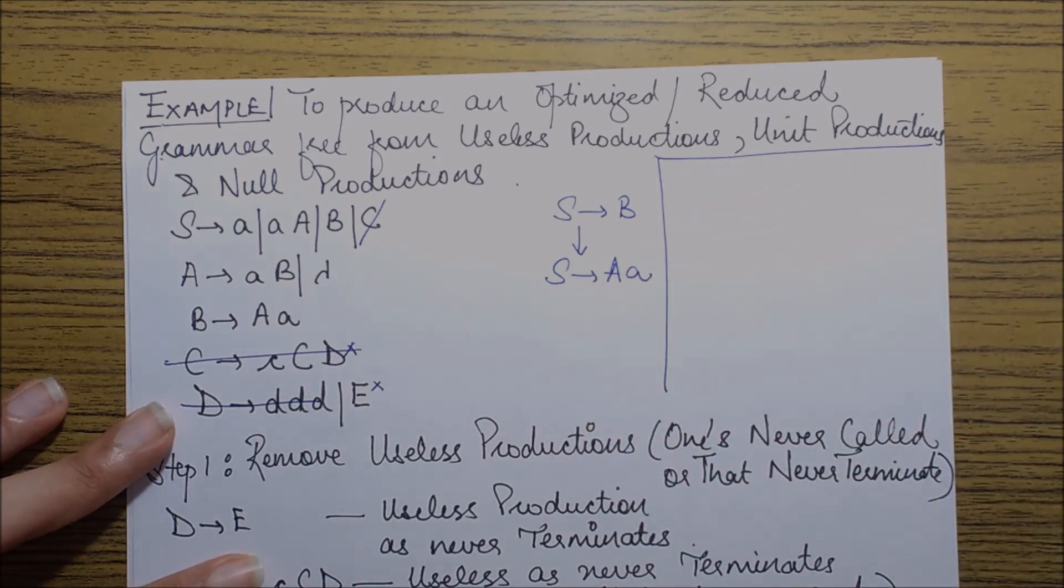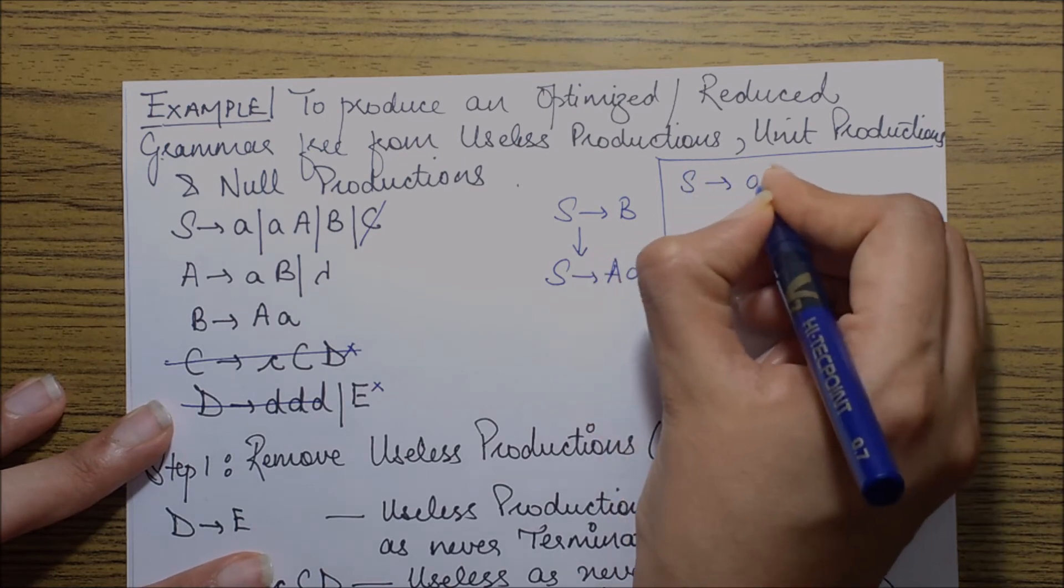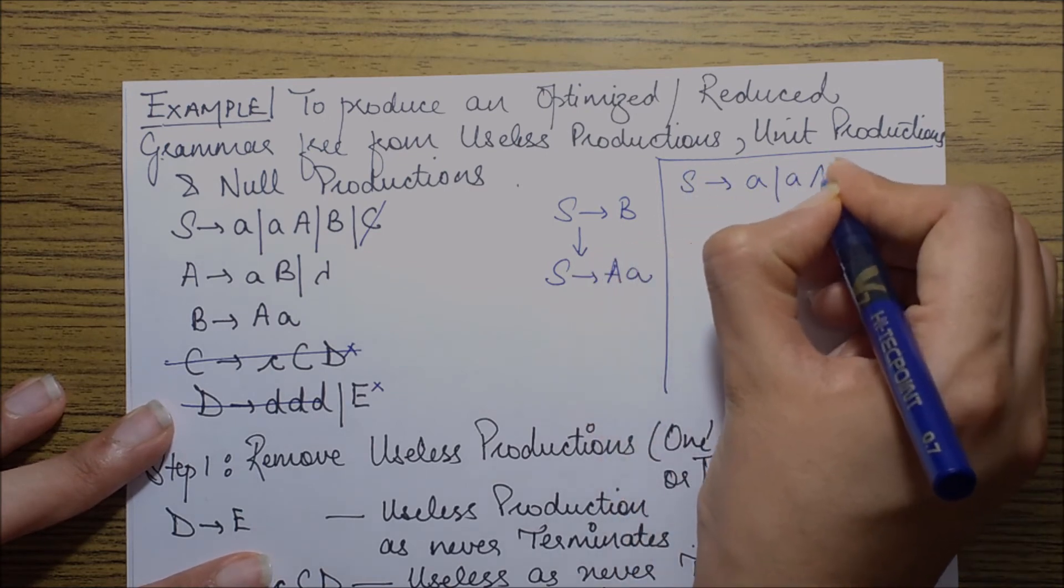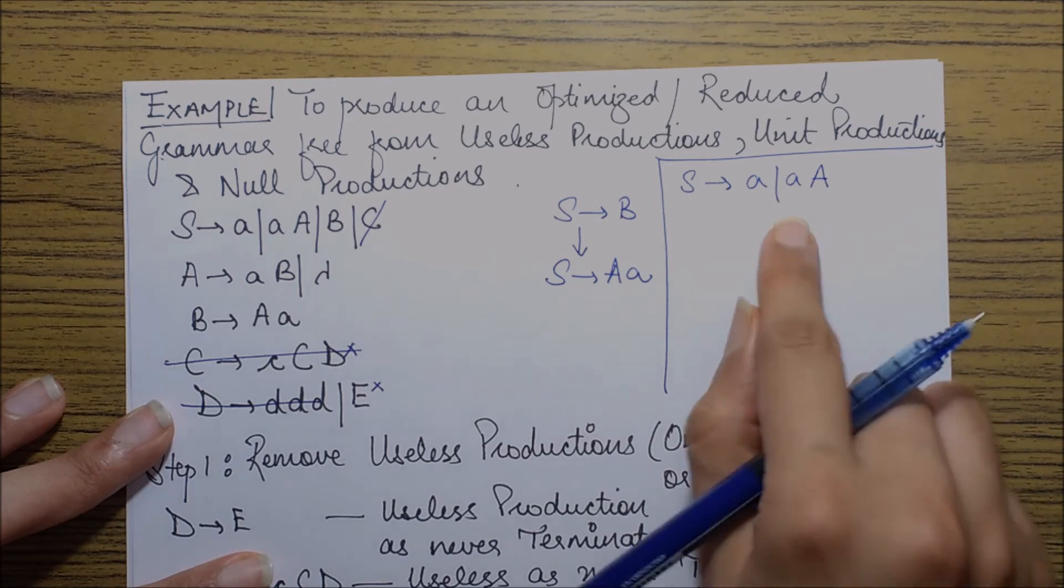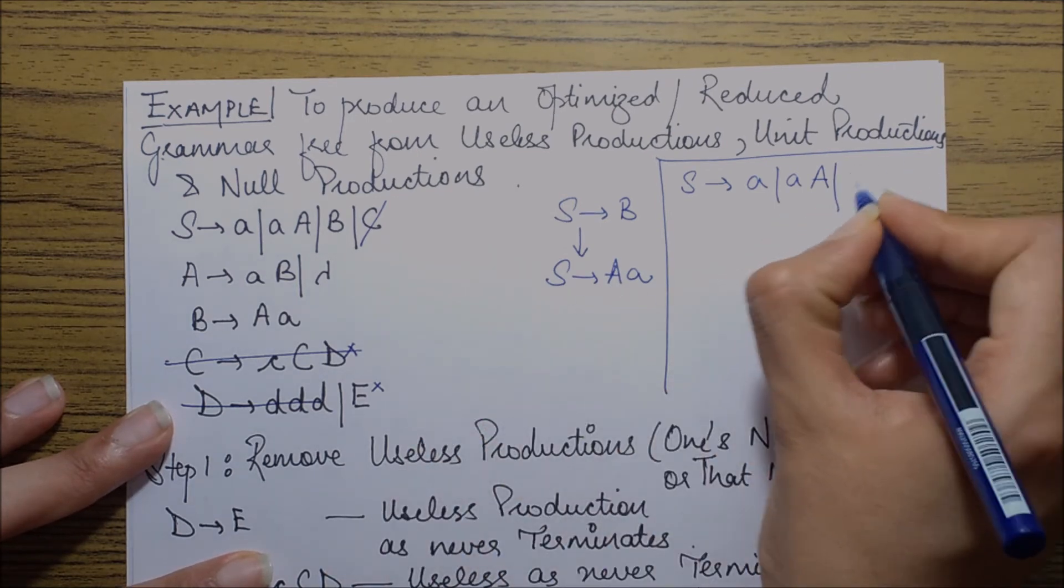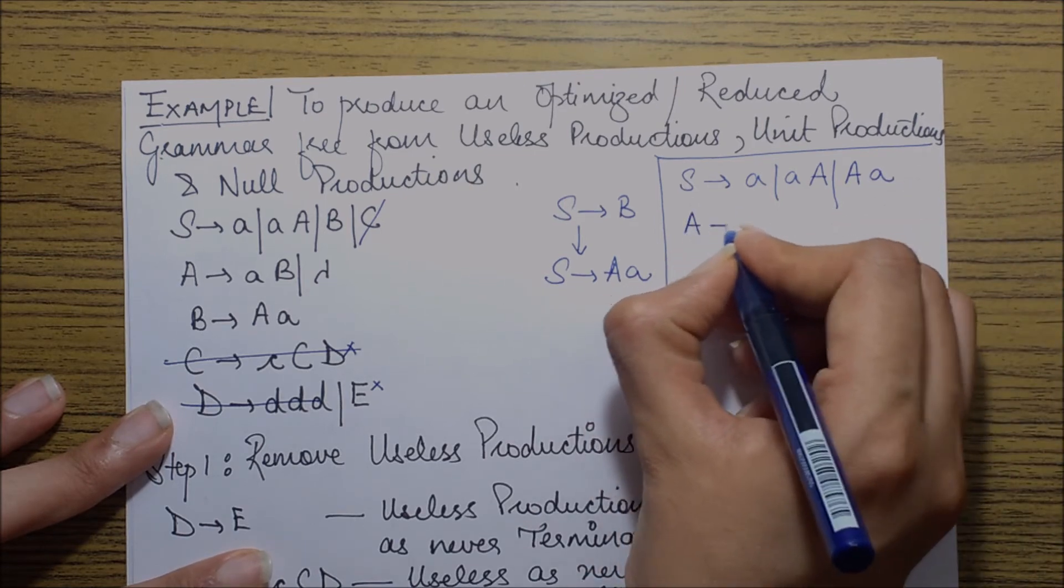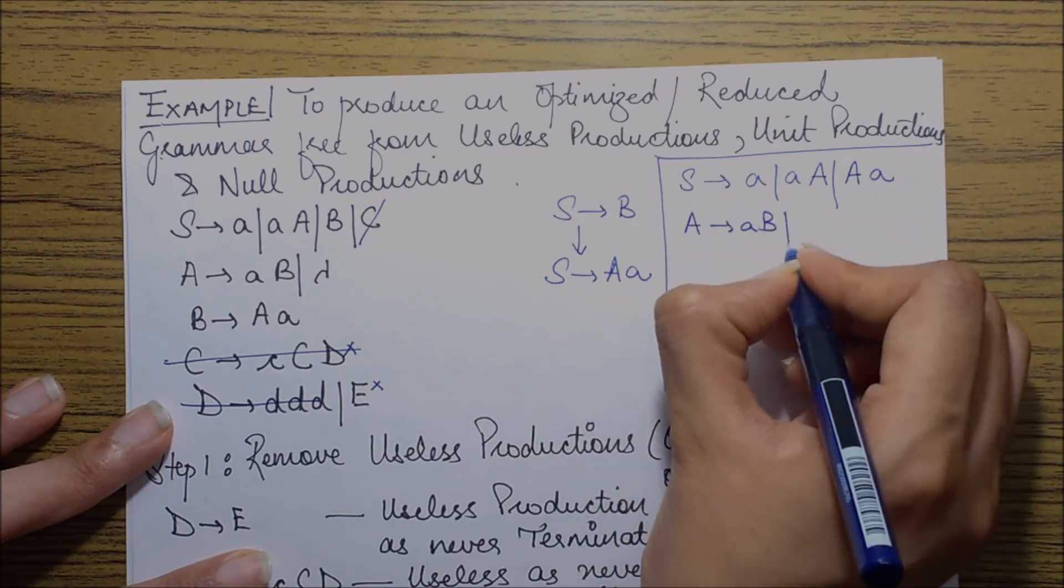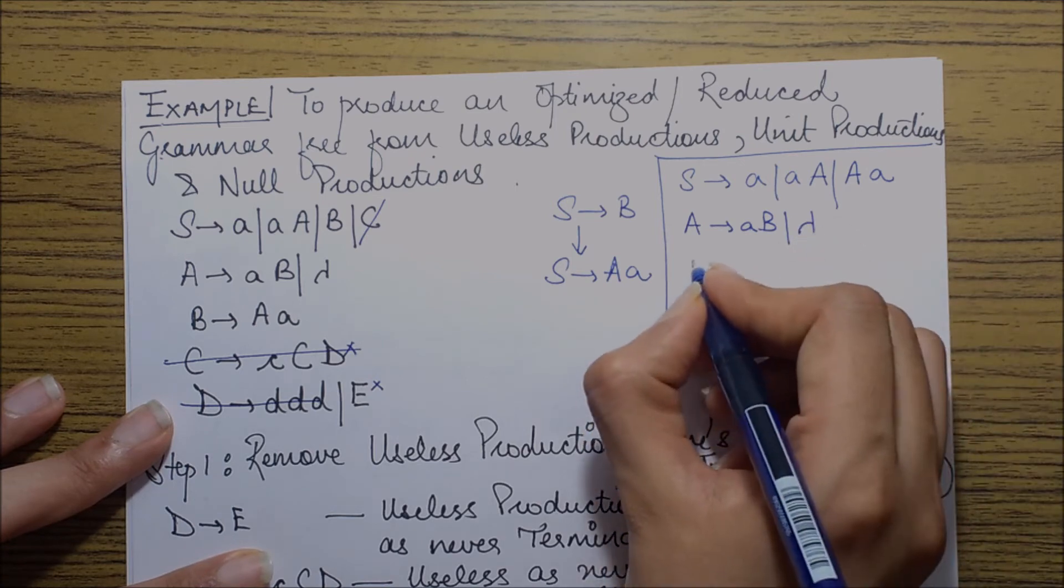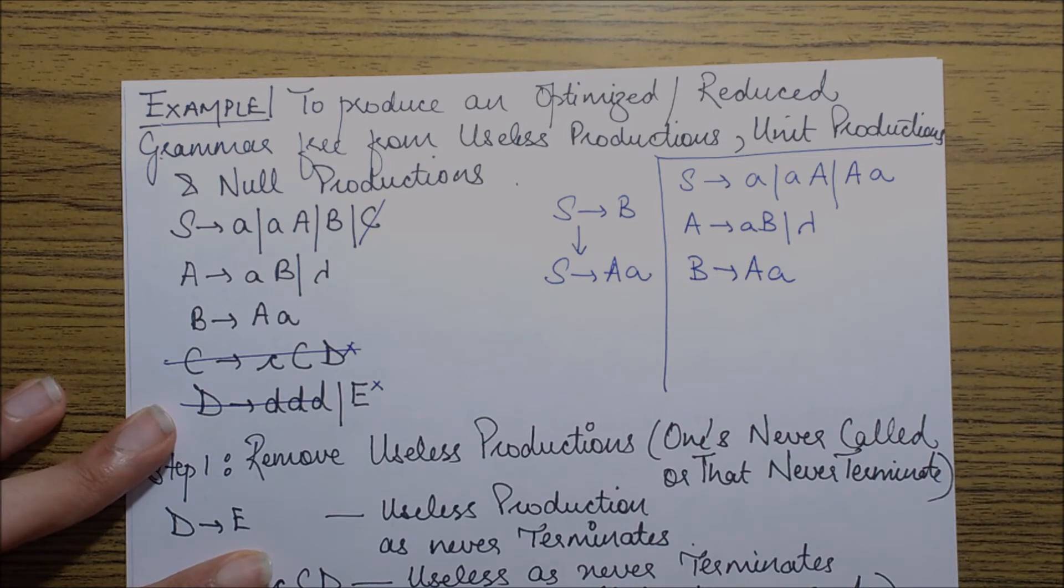So after solving out this, I have also removed the set of unit productions from my grammar and the optimized grammar after the removal of useless productions and unit productions is finally S goes to small a slash capital A, A goes to small a capital A, and then this new production that we've discovered capital A small a, A goes to small a capital B slash lambda, and B goes to capital A small a.